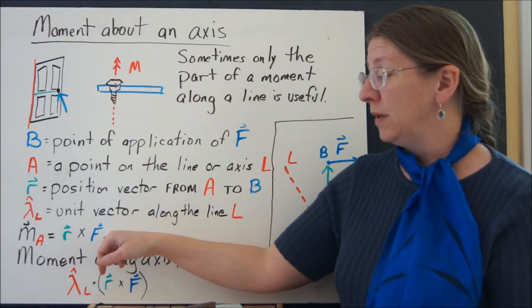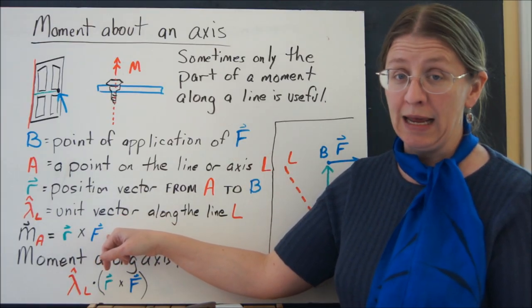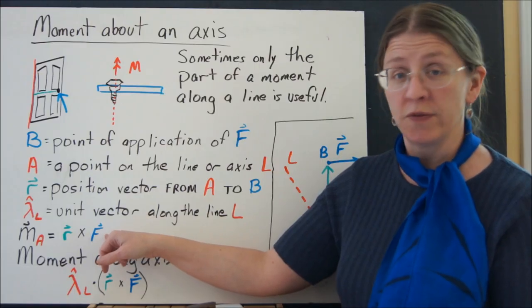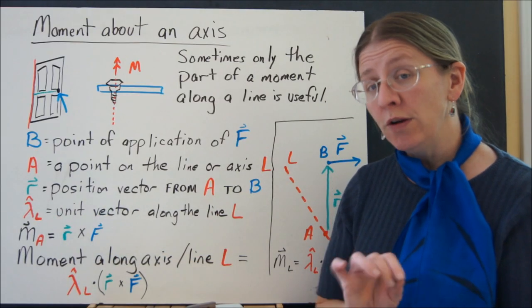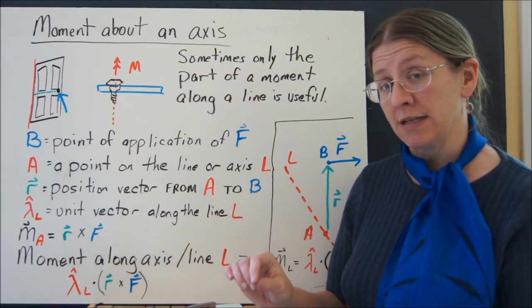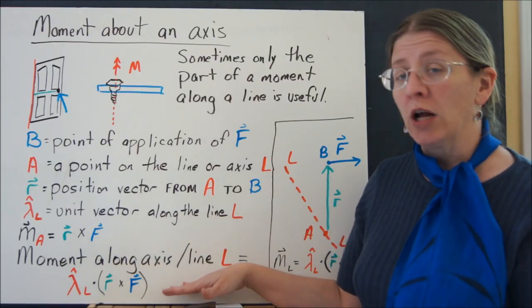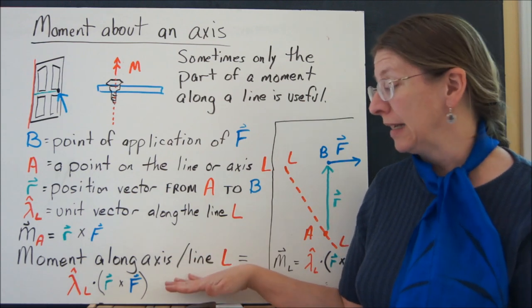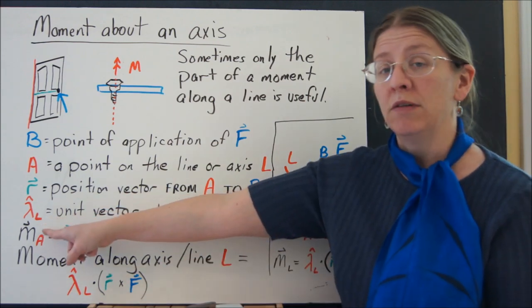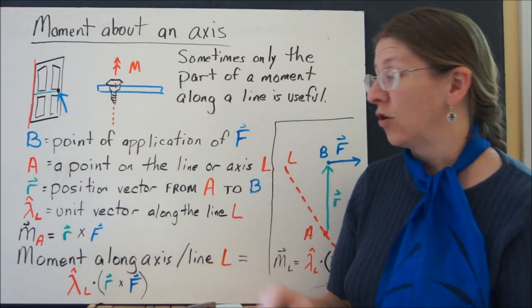Then the moment at A due to F is R cross F. That's the same as we had before. Let lambda L be the unit vector along the axis. The moment along the axis, the amount of the moment that actually lies along that line, is the dot product of lambda L and R cross F.